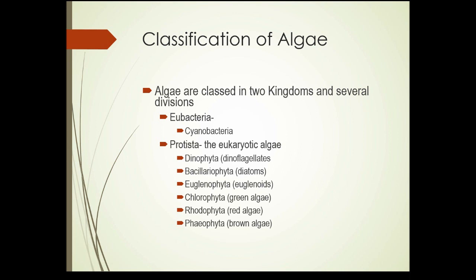Algae are classed into two kingdoms, with several divisions particularly in the second kingdom. The first is the eubacteria, which includes the cyanobacteria, also called blue-green algae. The kingdom Protista contains the eukaryotic algae — algae that have true nuclei with DNA contained in a nucleus. That includes the dinophyta (dinoflagellates), bacillariophyta (diatoms), euglenophyta (euglenoids), and the three more common types: chlorophyta (green algae), rhodophyta (red algae), and phaeophyta (brown algae).